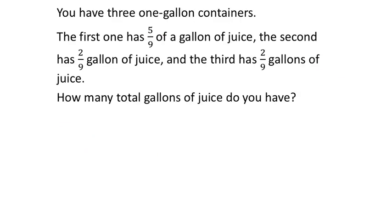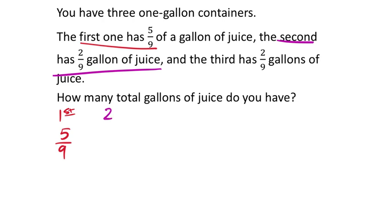Next problem: You have three one-gallon containers. The first has five-ninths of a gallon of juice, the second has two-ninths gallon of juice, and the third has two-ninths gallons of juice. How many total gallons of juice do you have? Since it asks for a total amount, we'll be adding these together.